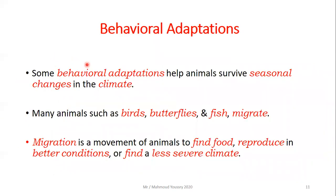Some behavioral adaptations help animals survive seasonal changes in the climate. Many animals such as birds, butterflies, and fish migrate. Migration means the movement of animals to find food or reproduce in better conditions, or to find a less severe climate.